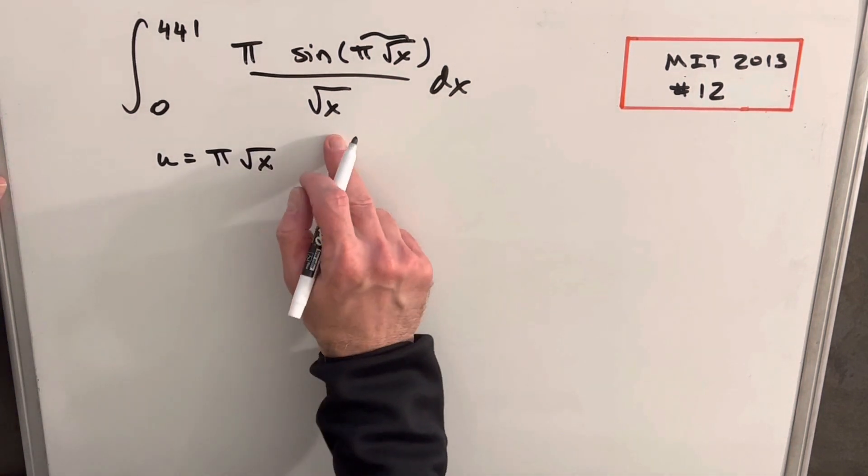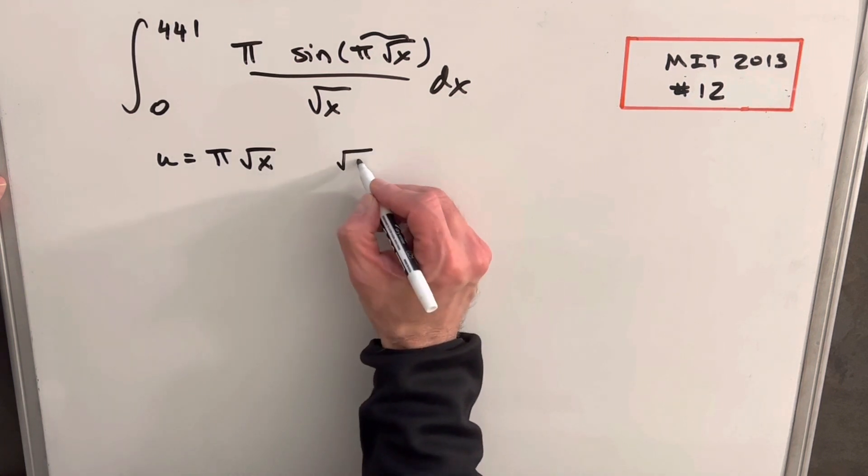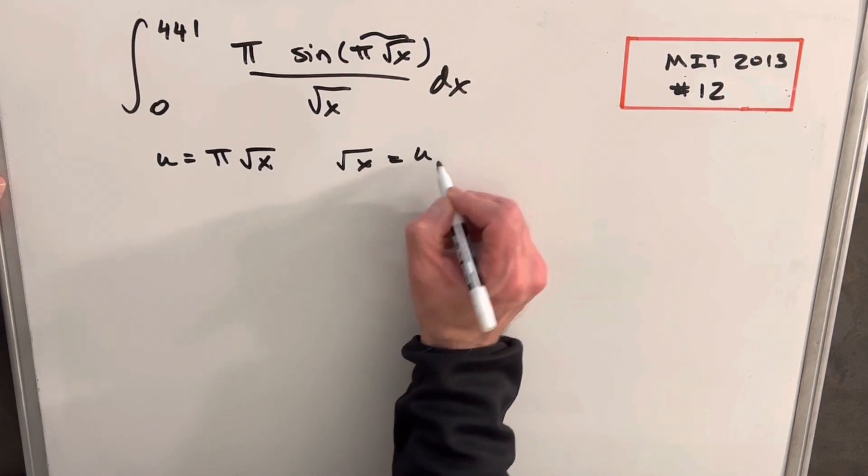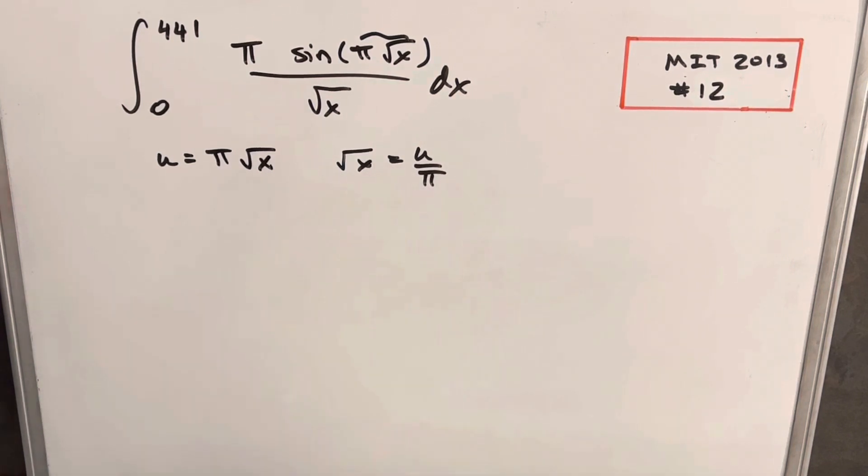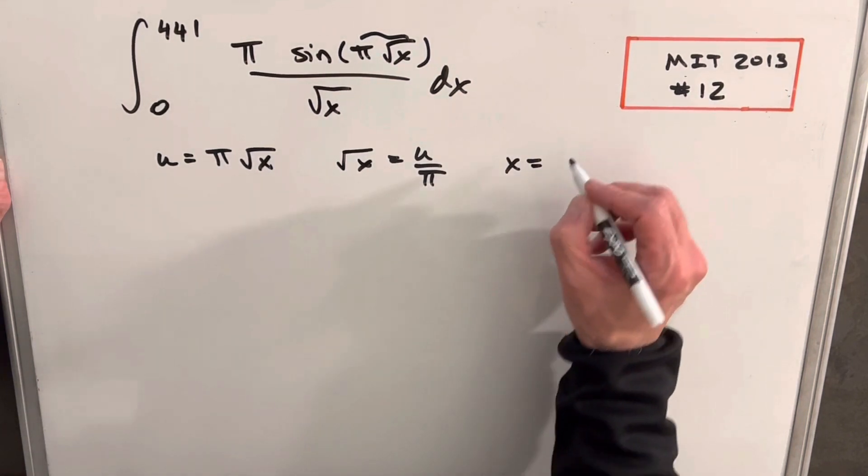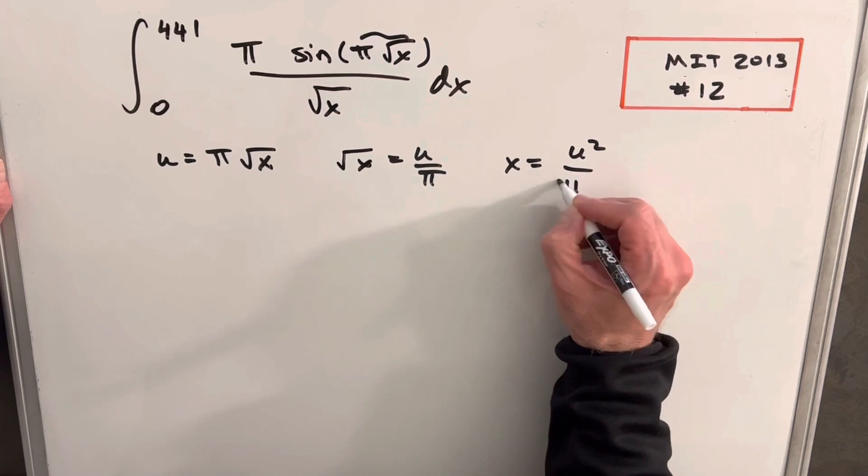I think it's going to be helpful to have a square root of x value, so we'll just solve for square root of x and say that's going to be u over pi. And then get our x. x is going to be u squared over pi squared.